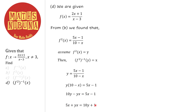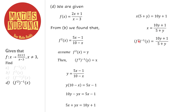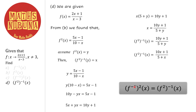Rearranging: bring all x to one side — 5x + yx = 10y+1, so x(5+y) = 10y+1, giving x = (10y+1)/(5+y). Therefore (f²)⁻¹(x) = (10x+1)/(x+5). Comparing with question c, we get the same answer! So we can conclude that (f⁻¹)²(x) = (f²)⁻¹(x). That's all for today — see you in the next question, bye!